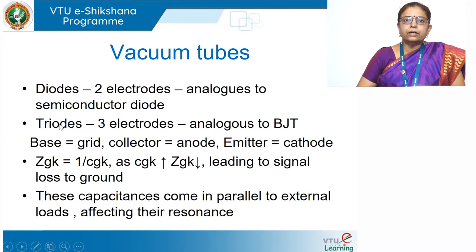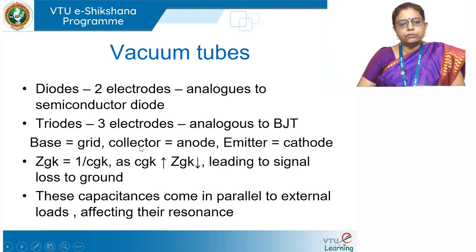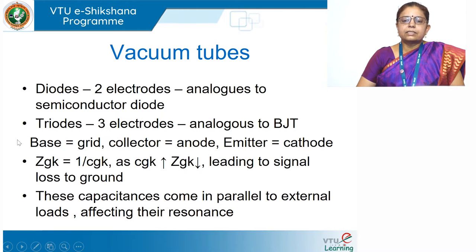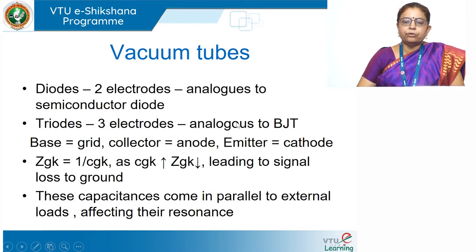Then we have the triode — a three-terminal device analogous to our bipolar junction transistor. In a transistor we have base, collector, and emitter. In the triode also, we had three analogous electrodes: a grid performing the function of a base, the anode performing the function of the collector, and the cathode performing the function of the emitter. This triode performed switching, amplification, and oscillation — the same three functionalities as the BJT.